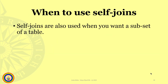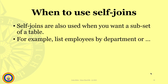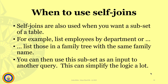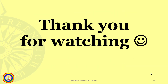Self joins are used when you want a subset of a table — for example, a list of employees by department, or a list of those in a family tree with the same family name. You can then use this subset as an input to another query, and this can simplify the logic a lot. Thank you for watching.